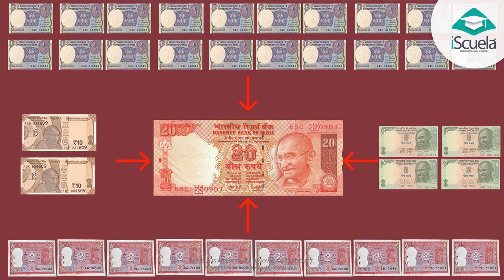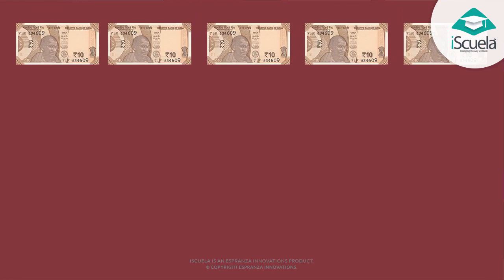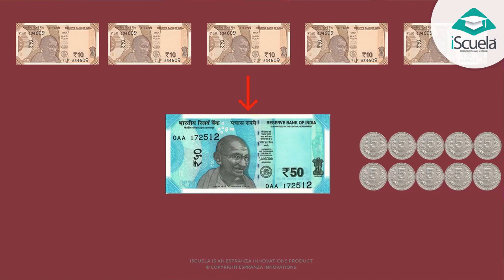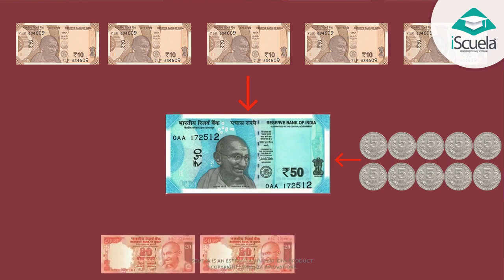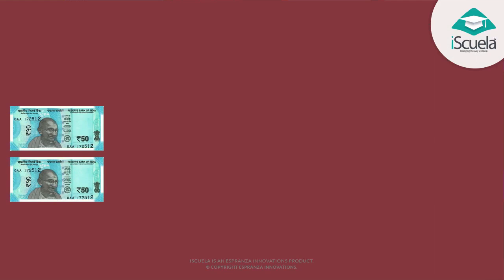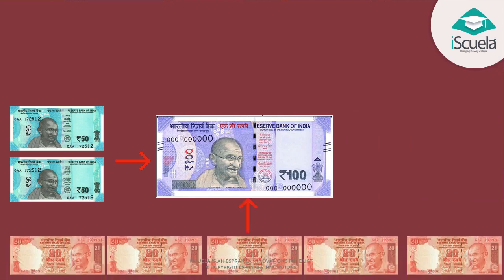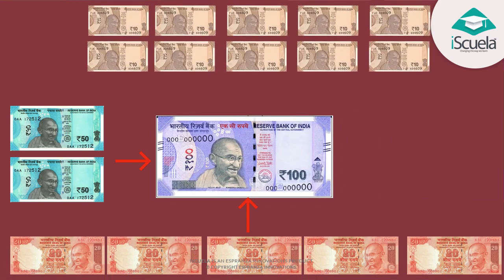5 coins of 10 rupees become 50 rupees. 5 notes of 10 rupees become 50 rupees. 20 rupees and 20 rupees and 10 become 50 rupees. Two currency notes of 50 rupees become 100 rupees. Five notes of 20 rupees become 100 rupees. Ten notes of 10 rupees become 100 rupees.